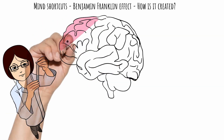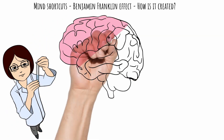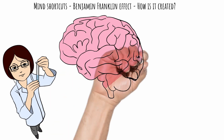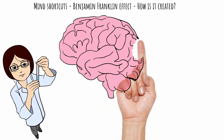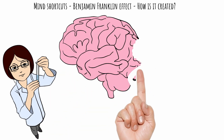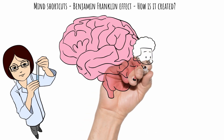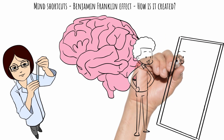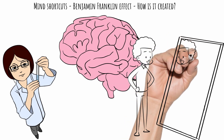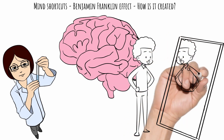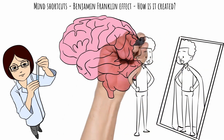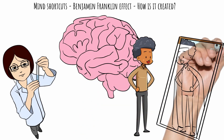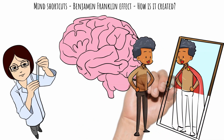The second theory is called self-perception. We observe ourselves, our actions, and form an explanation of who we are accordingly. In other words, we look at our actions and our brain creates a story of who we are based on those actions. So if we help another person, it doesn't make sense that we don't like them — why else would we help them?